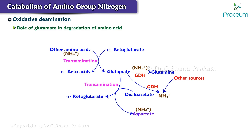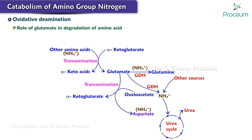Some of this nitrogen is released as ammonia by the glutamate dehydrogenase reaction, but much larger amounts of ammonia are produced from various other sources. Free NH4+ is one of the two forms in which nitrogen enters the urea cycle. The second nitrogen for urea synthesis is provided by aspartate; indirectly, the amino group nitrogen in aspartate is obtained from glutamate by transamination.